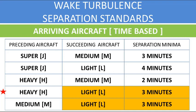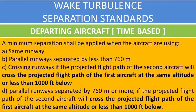This table is used for applying time-based wake turbulence separation between arriving aircraft. For example, if a light aircraft is arriving behind a heavy aircraft, three minutes of wake turbulence separation is required. Wake turbulence separation is also applied between departing aircraft when they are using the same runway or parallel runways separated by less than 760 meters.